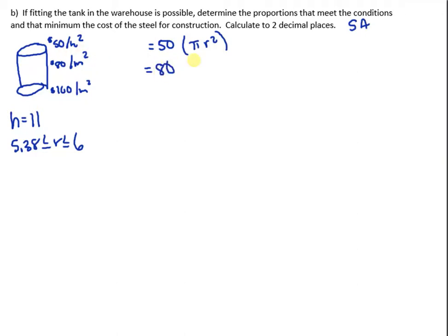For the middle, we have 80 times 2 pi r times the height, and for the bottom we have 100 times pi r squared again. Therefore the cost of the tank is going to be, well we have like terms here with the pi r squareds, so it's going to be 150 pi r squared plus 160 pi r h.